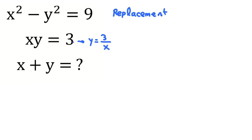You can divide both sides by x. Why? Because x is not 0. If x is 0, then the left side will be 0, but the right side is 3. And then y equals 3 over x. Then we should replace y here with 3 over x.